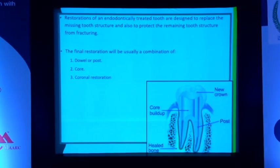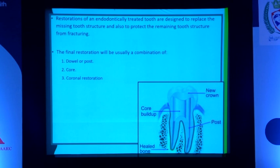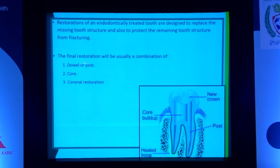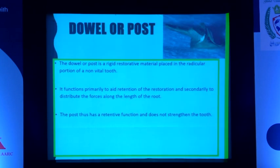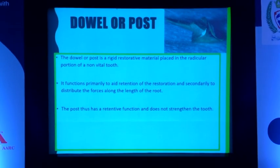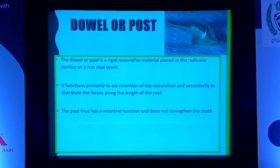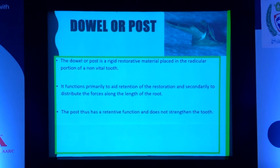The components of intra-radicular restoration are: a dowel or post — both terms are used interchangeably — then a core, and a coronal restoration. A dowel is a rigid material placed intra-radically. It can range from wood historically to the posts we use now.